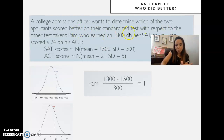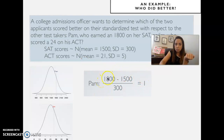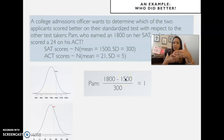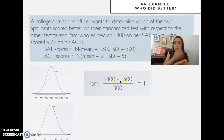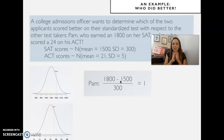The general formula takes the difference between the score and the mean, divided by the standard deviation. For Pam, the difference was 300 divided by 300, giving 1. If the standard deviation were 600 and the difference were 300, you'd be only 0.5 standard deviations above the mean.